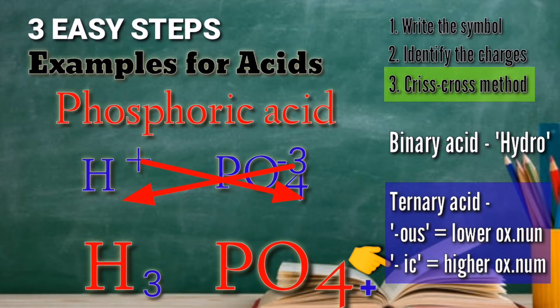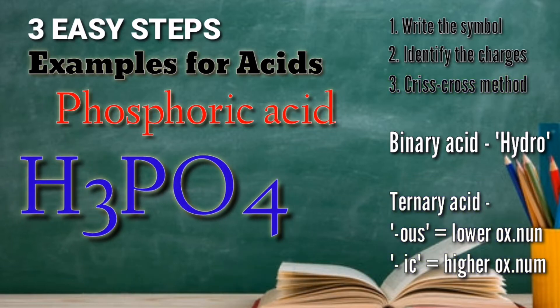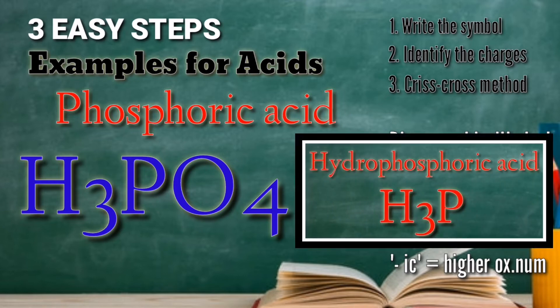The formula for our phosphoric acid is H3PO4. Let's compare: phosphoric acid is H3PO4 and hydrophosphoric acid is H3P. The difference is that 'hydro' indicates a binary acid with only two elements, while there is no 'hydro' for ternary acidic compounds.